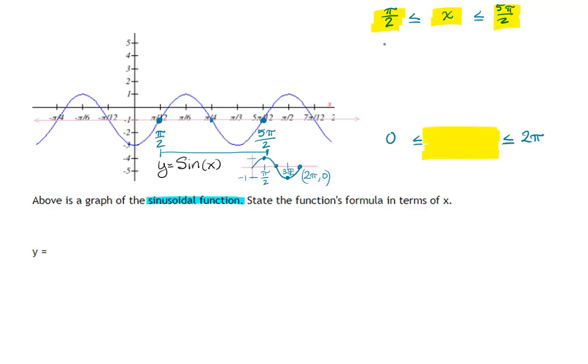So I'm going to try and get this to be a zero, so I'm going to subtract pi over two from all three parts. And that gives me zero is less than or equal to x minus pi over two is less than or equal to four pi over two.